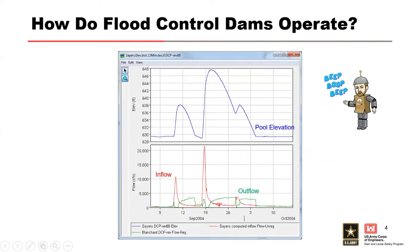By examining operations during past events, you'll be able to better understand how the project is typically operated. Flood control dams typically operate during flood events by reducing outflow to minimum flows during the rising limb of a hydrograph to store flood water and minimize downstream damages. As the pool reaches the top of flood pool, outflows are typically increased either due to flows through an uncontrolled spillway or by gate operations for a gated spillway according to a set of spillway operating rules.